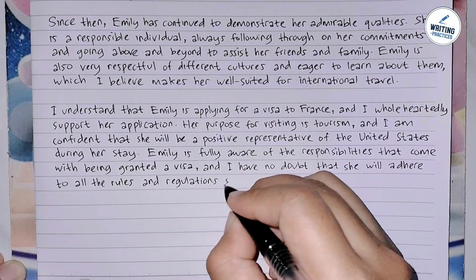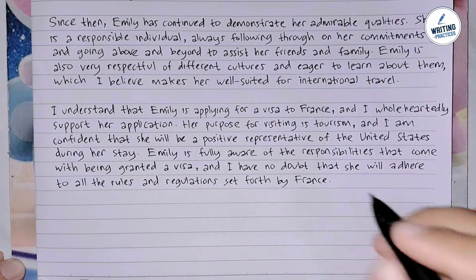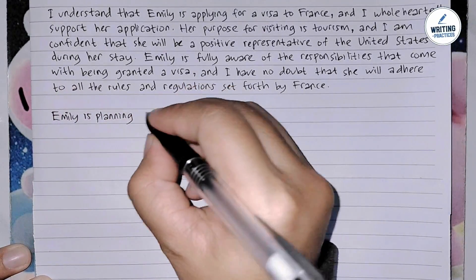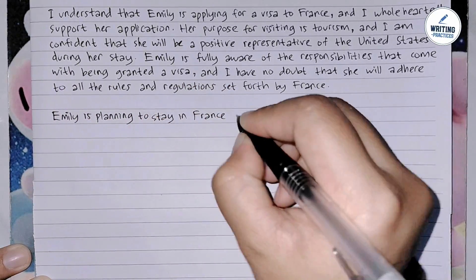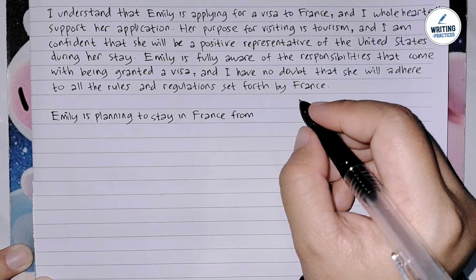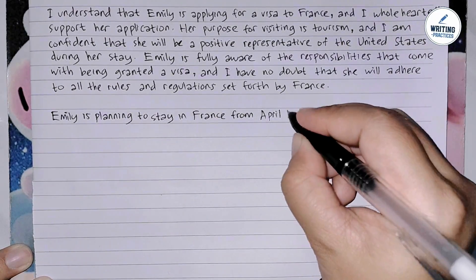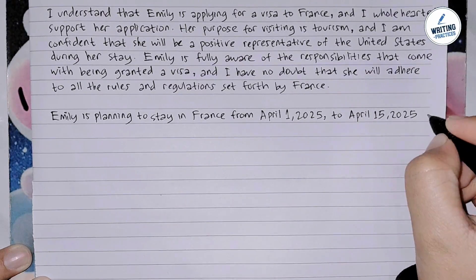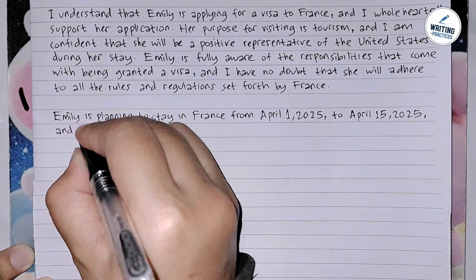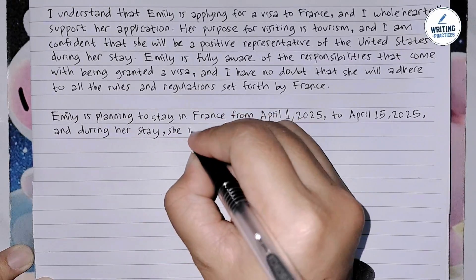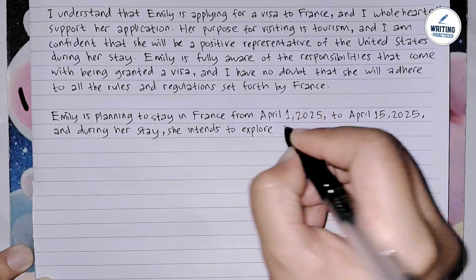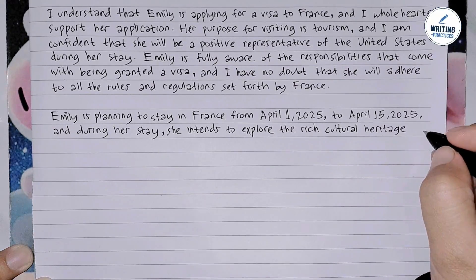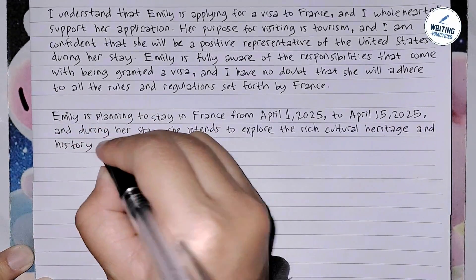In the fifth paragraph, you need to write the travel details. Provide specific details about the applicant's planned travel dates, complete with their activities during their stay. This helps verify the applicant's intentions and timeline. You can write the dates and purpose of the trip, such as sightseeing or cultural exploration.